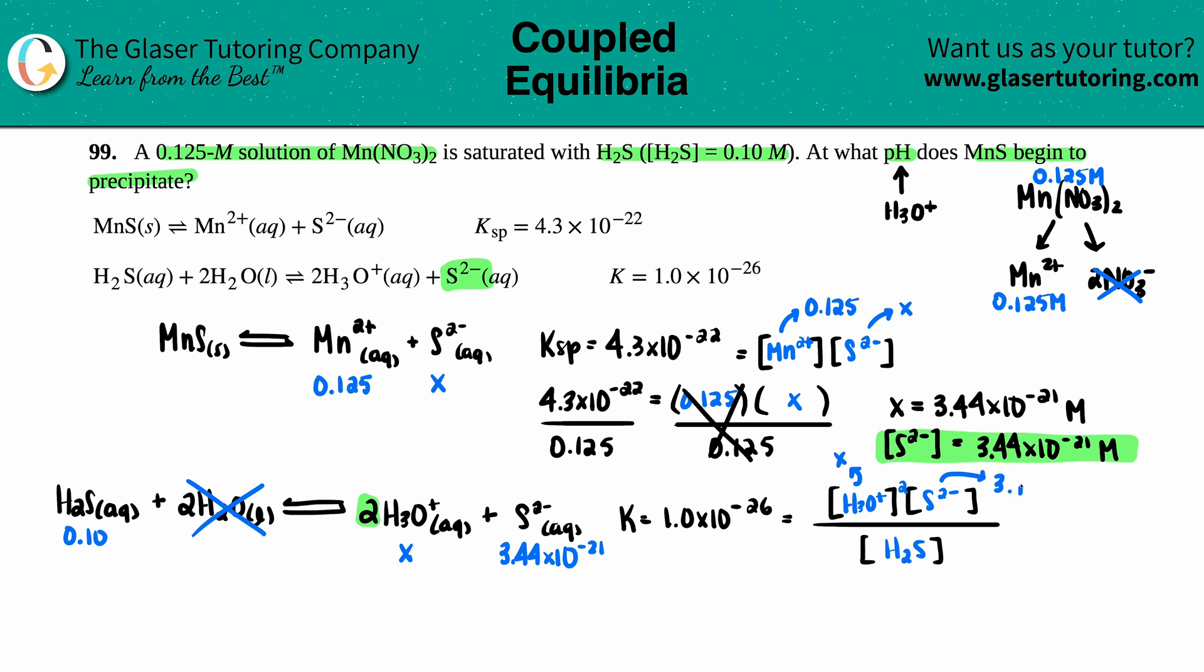So now H₃O⁺ is going to be X. S²⁻ is 3.44 times 10 to the negative 21st. H₂S is 0.10. And let's just plug it in.